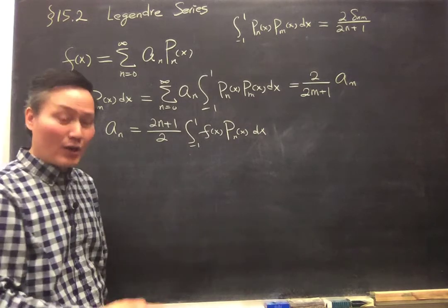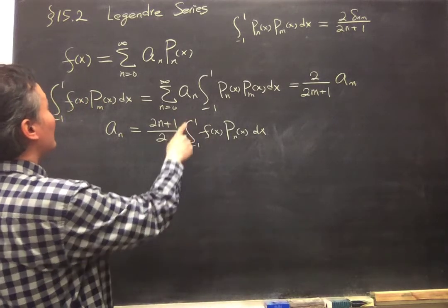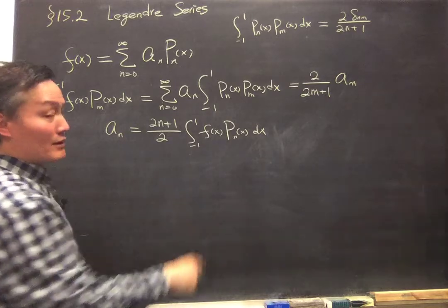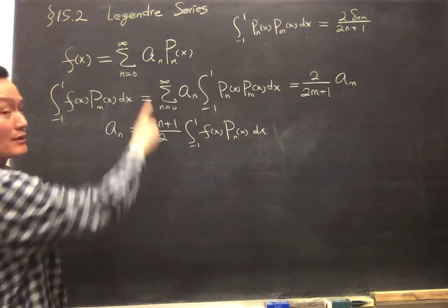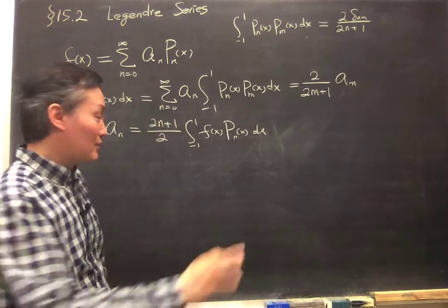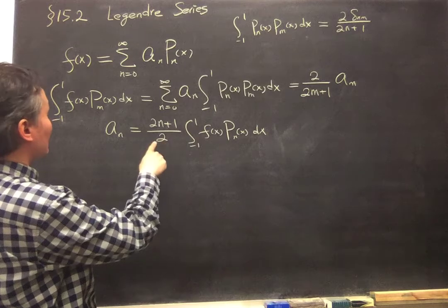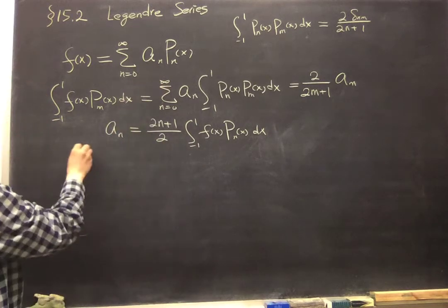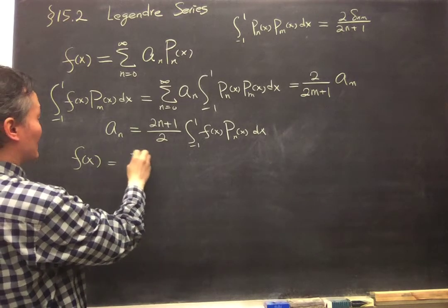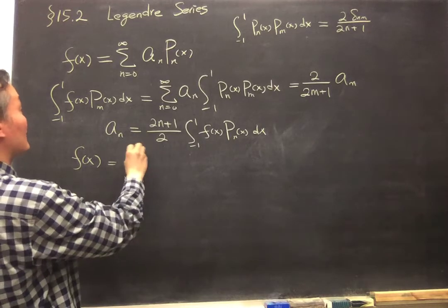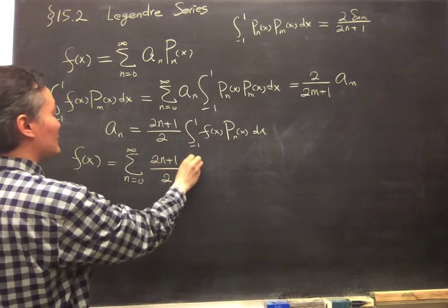So but then in order to see the completeness, we can actually substitute this back to here and express the completeness condition in terms of a delta function. So if we substitute this back to here, f(x) will be integrating, summing n from 0 to infinity a_n, which is 2n plus 1 over 2, integrating